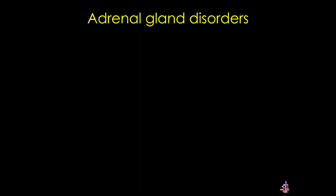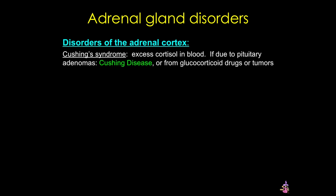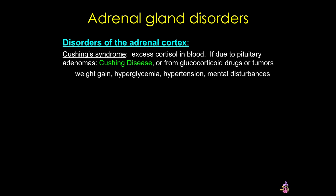I'll end with a brief discussion of some adrenal gland disorders. Cushing's syndrome is caused by too much cortisol in the blood. If this is due to a pituitary adenoma producing too much adrenocorticotrophic hormone (ACTH), we call this Cushing's disease, though other things can cause this syndrome. Symptoms include a very characteristic pattern of weight gain, particularly in the neck, face, and trunk — called truncal obesity — as well as hyperglycemia, hypertension, and mental disturbances.